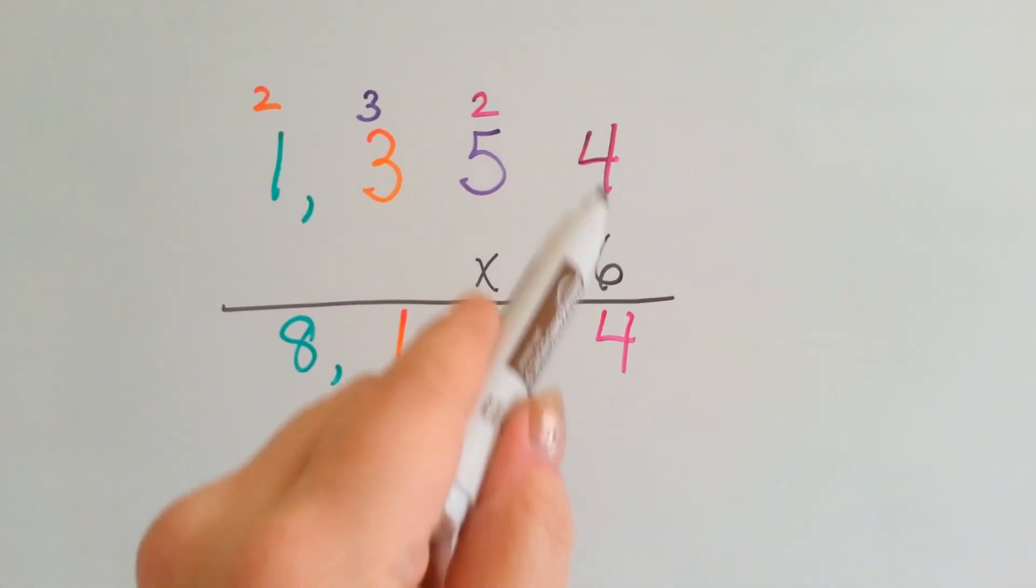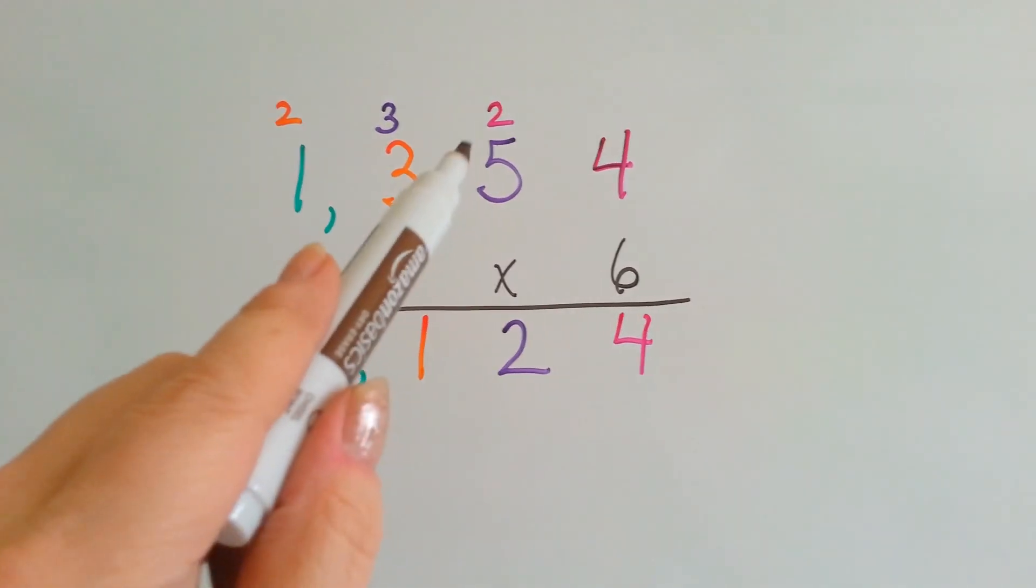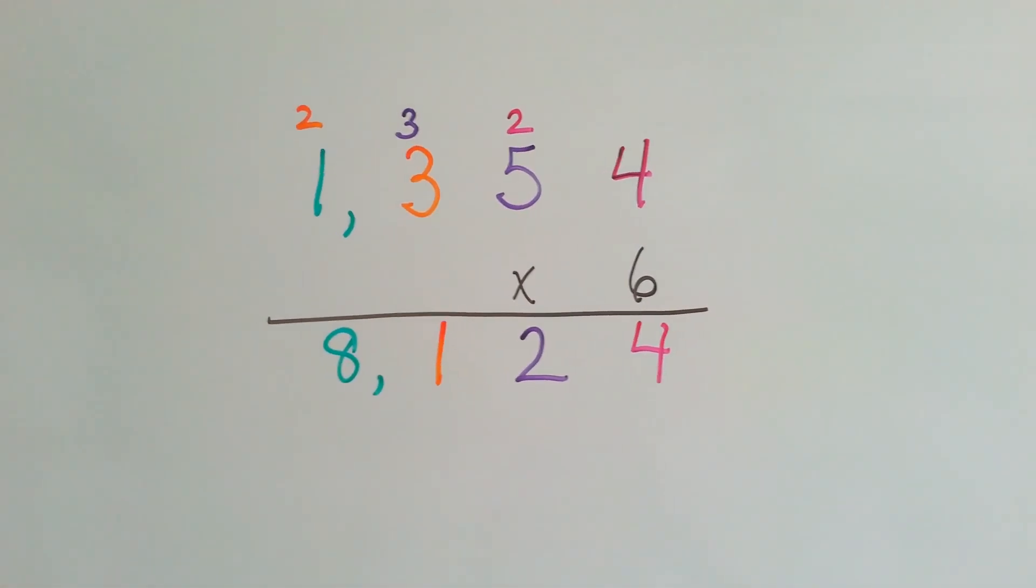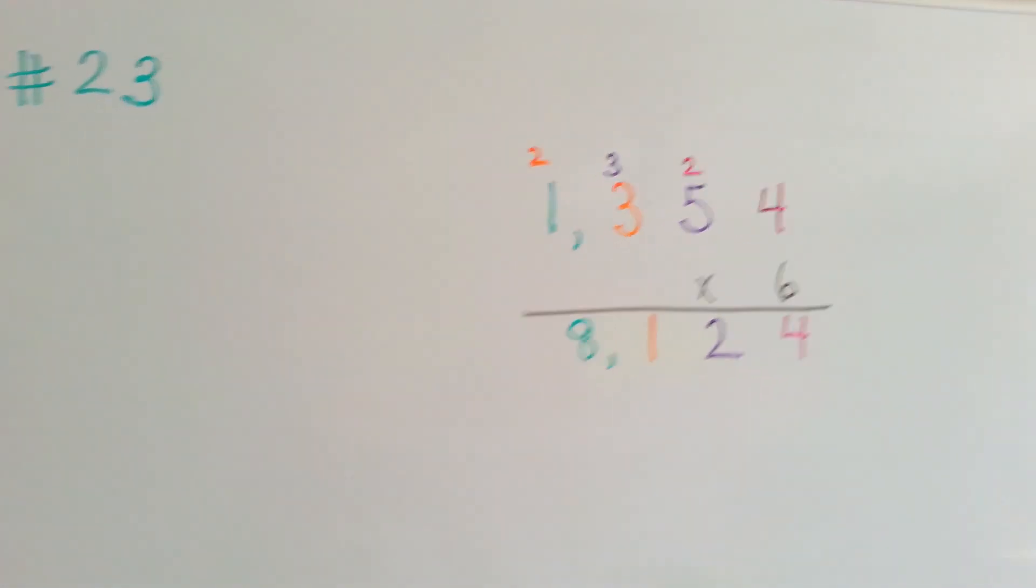See how each one got its turn starting with the ones, and we slowly fanned over to each one. If there was a number carried over, we added it. Don't multiply the carryover, you add the carryover.